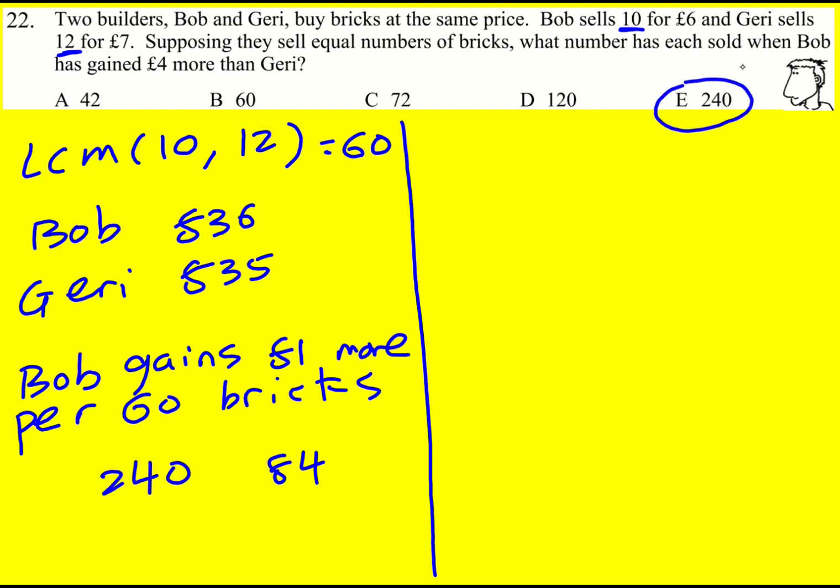Approach number two, a little bit more technical. I actually worked out the price per brick. So Bob for one brick is going to gain, he sells 10 for six pounds, so he's going to get 6 over 10 pounds per brick or 3/5 of a pound per brick. Geri, for the same thing, one brick is going to be 7/12 and that doesn't simplify.